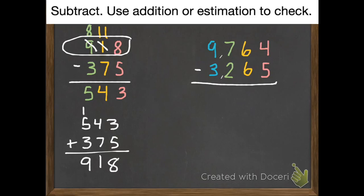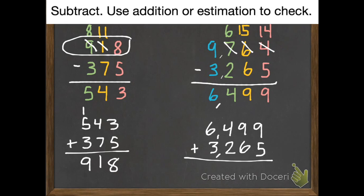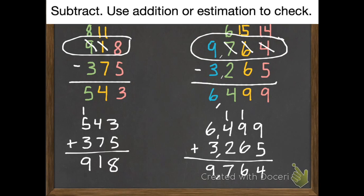Second practice problem: 4 subtract 5, so we borrow — 14 subtract 5 is 9. 5 subtract 6, borrow again — 15 subtract 6 is 9. 6 subtract 2 is 4. 9 subtract 3 is 6. So 6,499 is our difference. Check: adding gives us 9,764, so we're ready to move on.